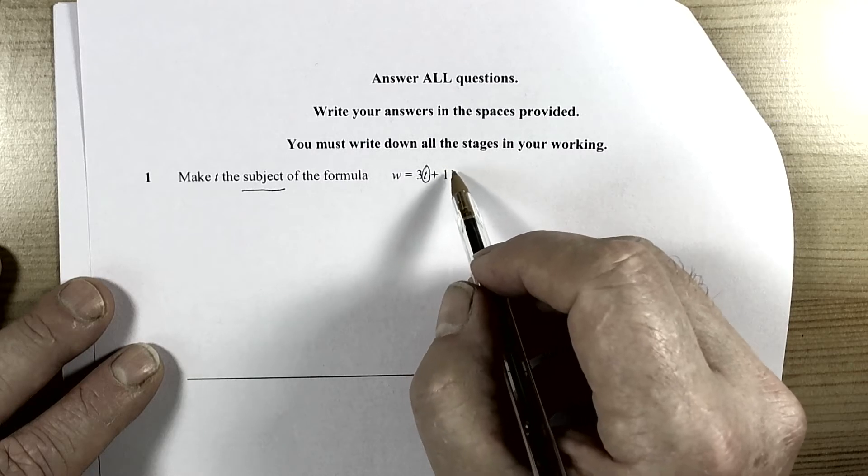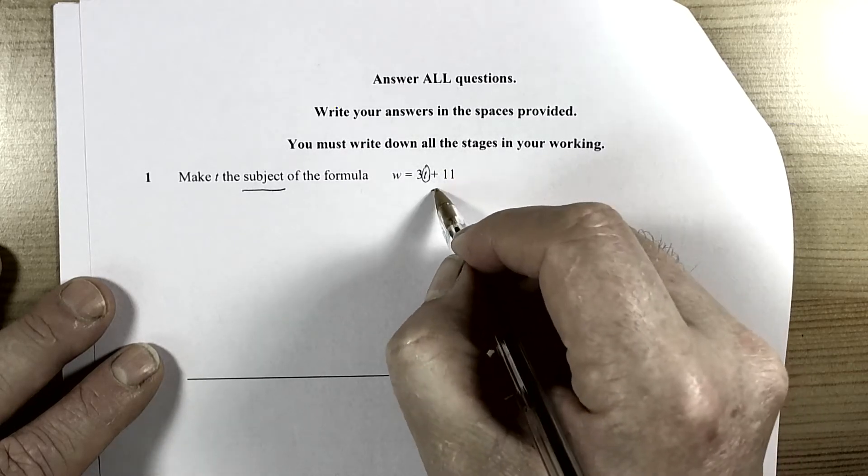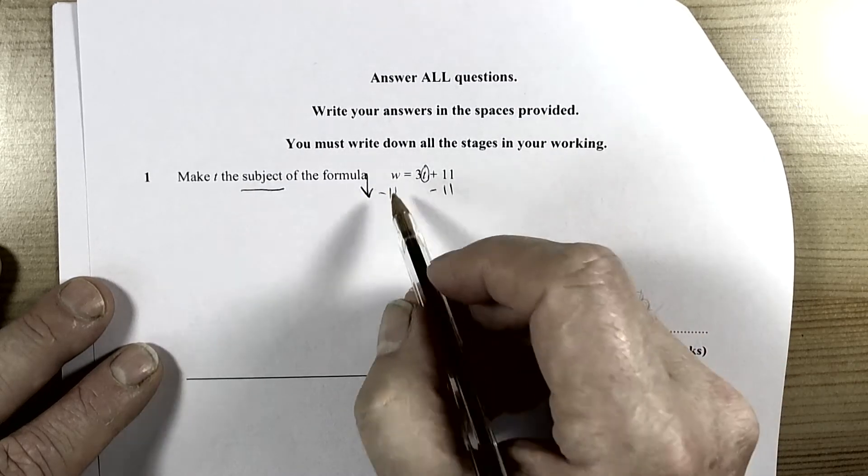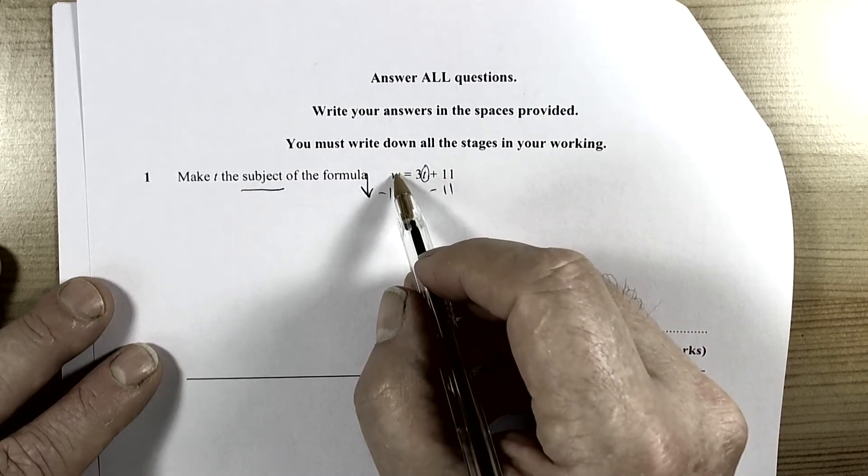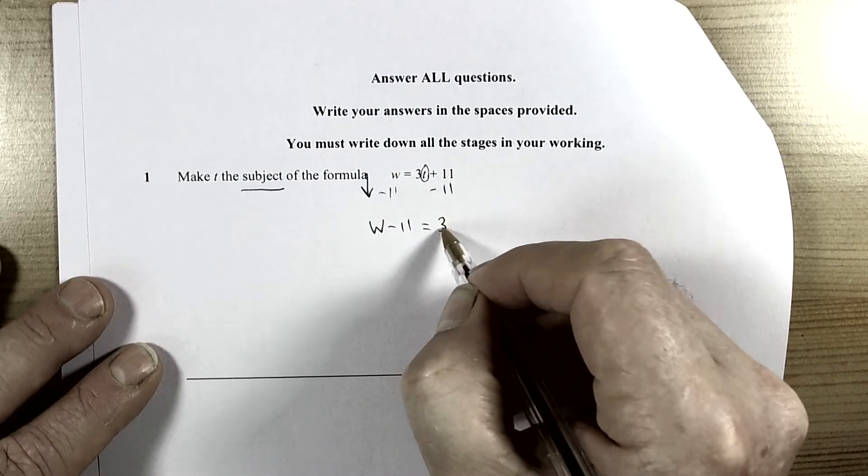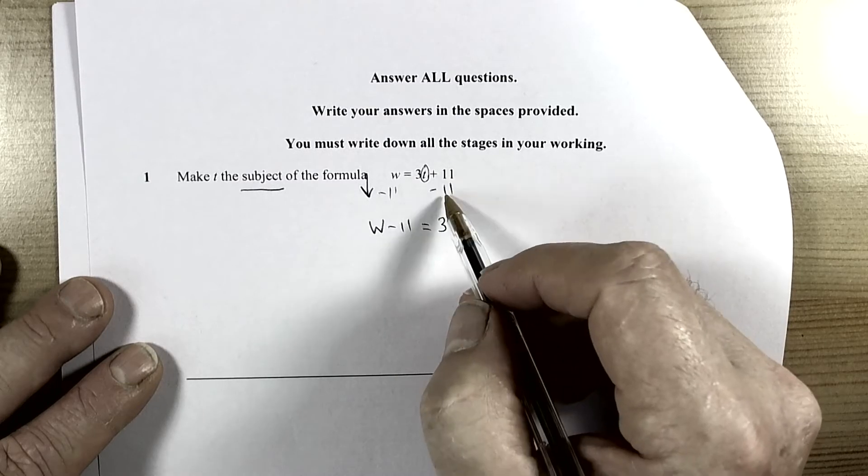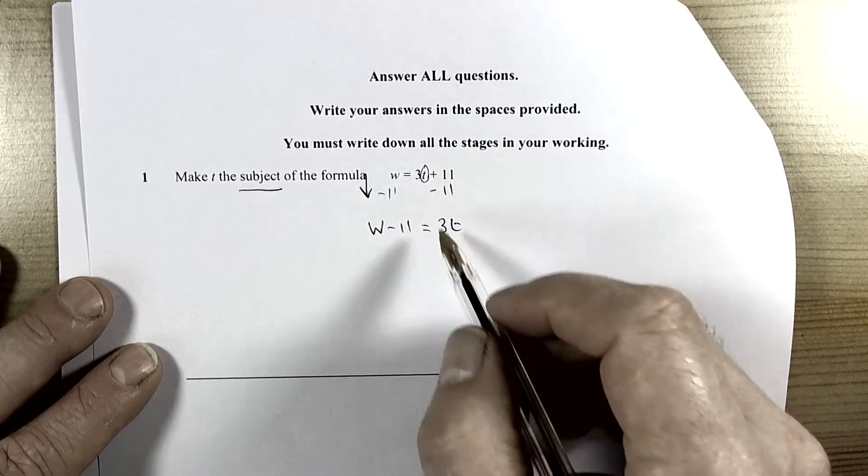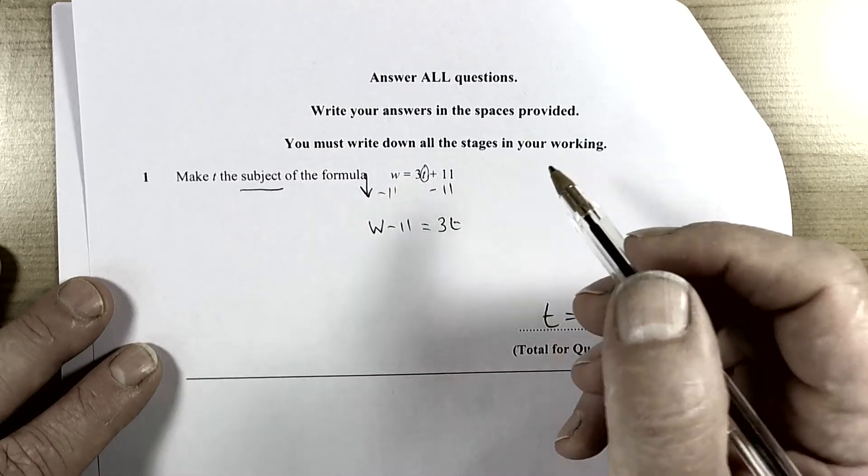Here we are going to take away 11 first, and remember it is a top down process. We started with w on the left hand side of the equals, so we have now got w take away 11, and that is equal to 3t, because the 11 take away 11 has made 0. So that 11 has disappeared from the right hand side, it is transferred over to the left hand side of the equals.